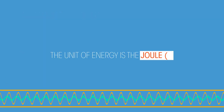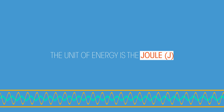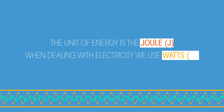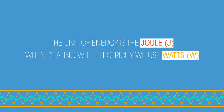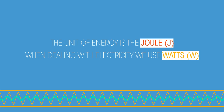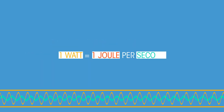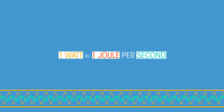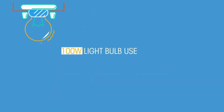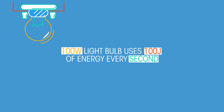The unit of energy is a joule, however when dealing with electricity we actually use watts. A watt is a measure of power where one watt is equal to one joule per second. So a 100 watt light bulb uses 100 joules of energy every second.